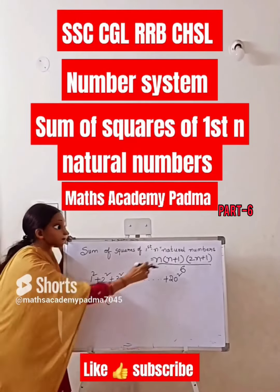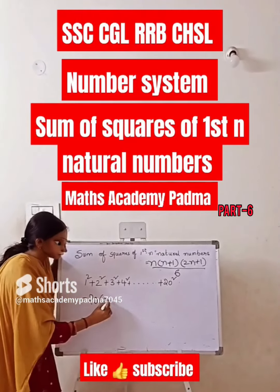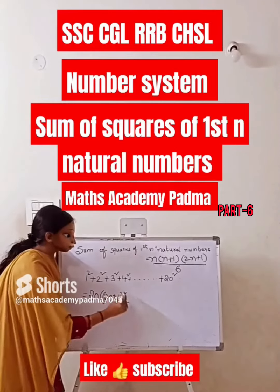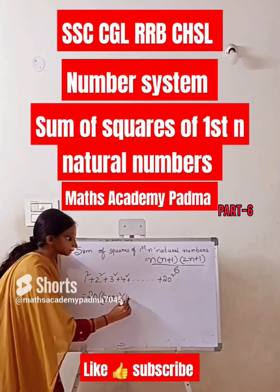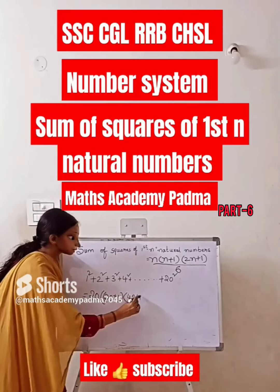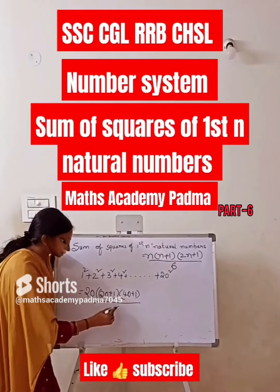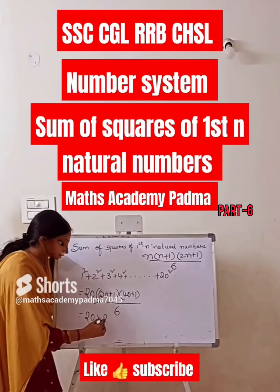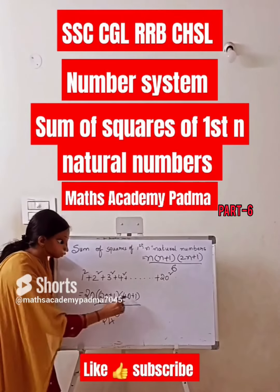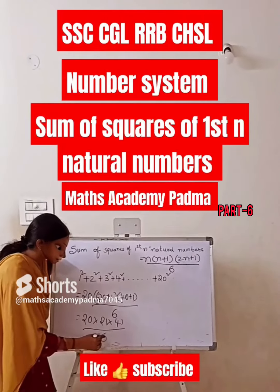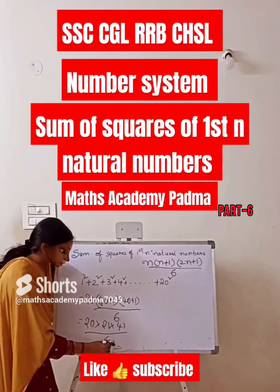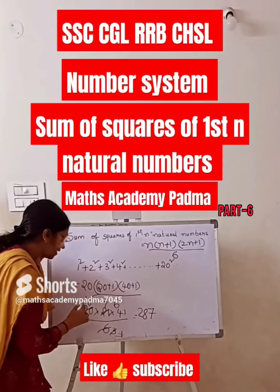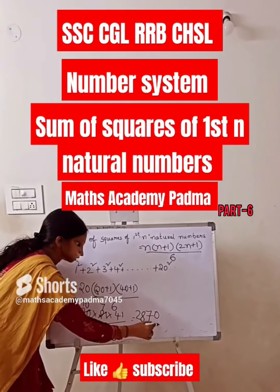With n = 20: n+1 = 21, and 2n+1 = 2×20+1 = 41. So the answer is 20 × 21 × 41 divided by 6, which equals 2870.